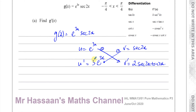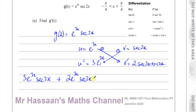So applying the product rule, you get secant 2x times 3e to the power of 3x, which gives 3e to the power of 3x times secant 2x, plus 2e to the power of 3x times secant 2x tan 2x. And that is g dash of x — the answer to part a.